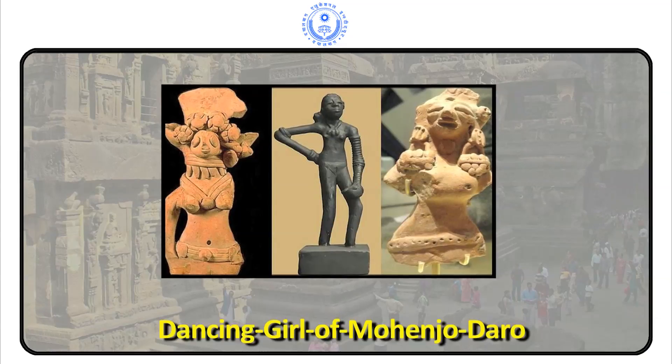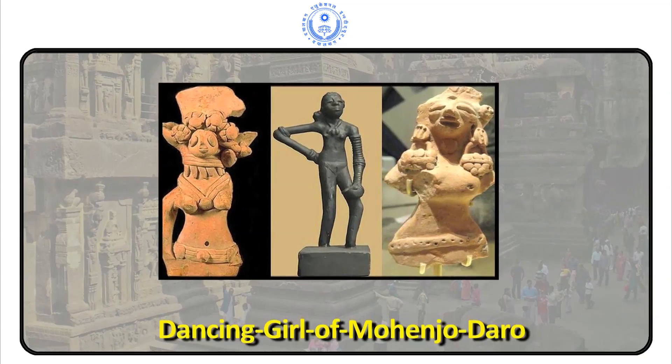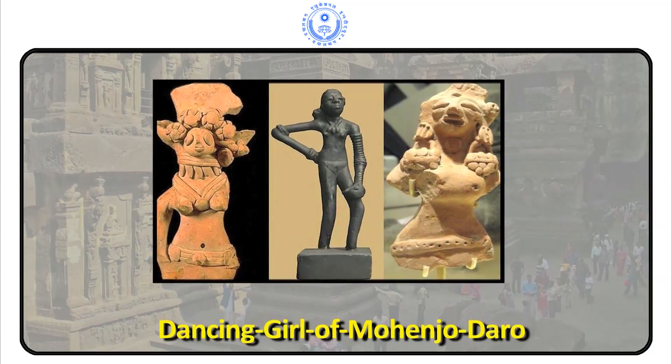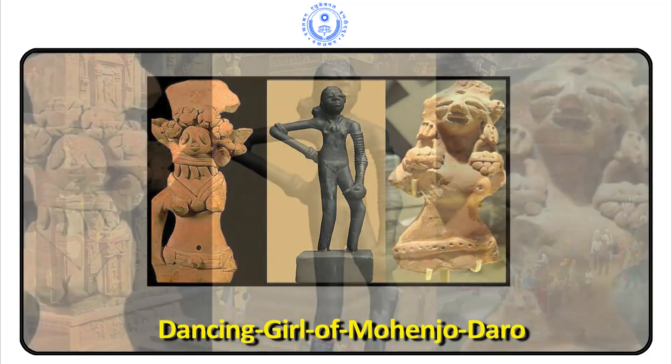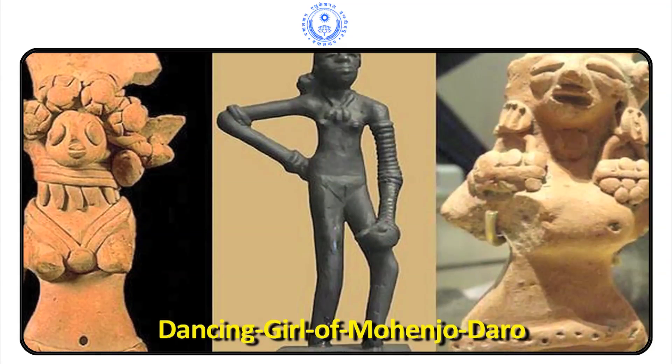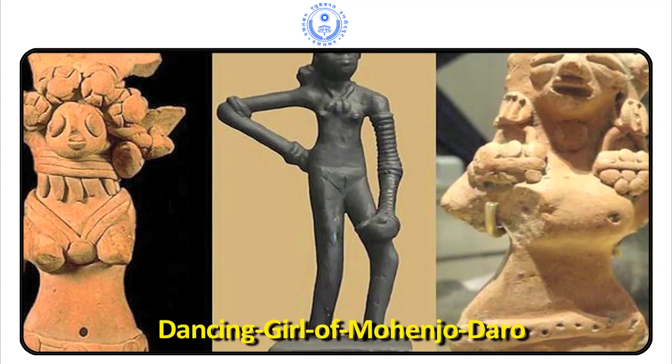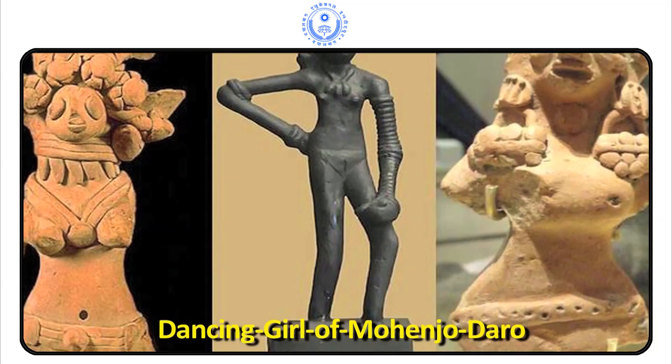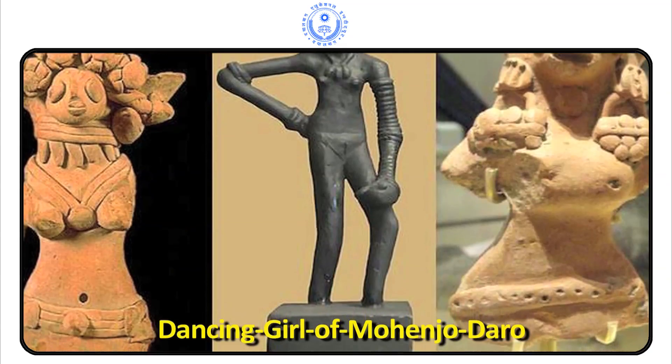We must also understand if it is possible to trace any deterministic evolutionary pattern through these developments. The beginning of Indian Sculpture may be traced in Indus Valley Civilization, even though the time lapse between Indus Valley and the next phase of Indian Sculpture, i.e. the Maurian Period, is too huge.